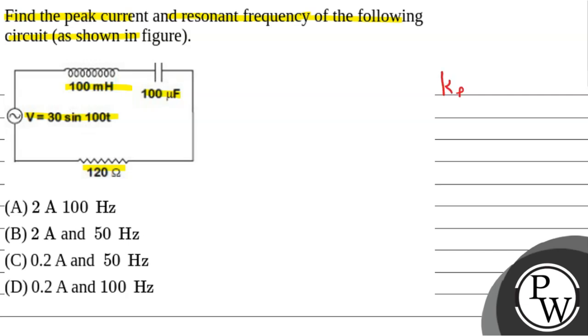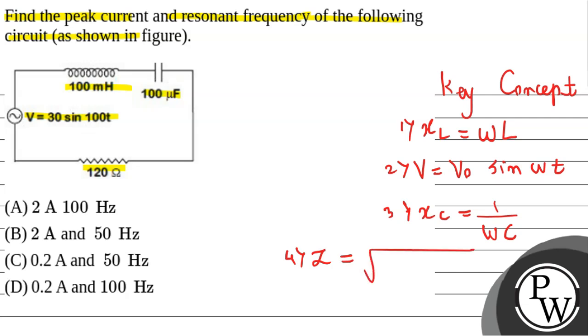Before we start the solution, let's talk about the key concepts we're going to use. First, the formula of inductive reactance XL is given by omega into L. Second key concept: the instantaneous voltage V is given by V0 sin of omega into T. Third, inductive capacitor reactance is given by 1 by omega into C. And fourth, the formula of impedance is Z equals under root of R square plus XL minus XC whole square.